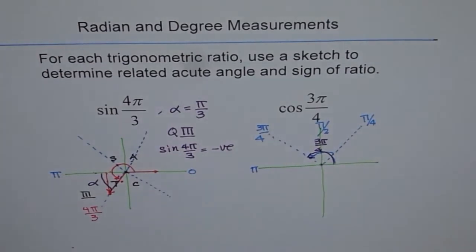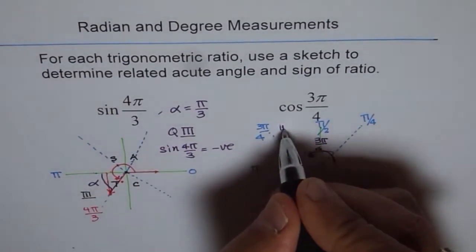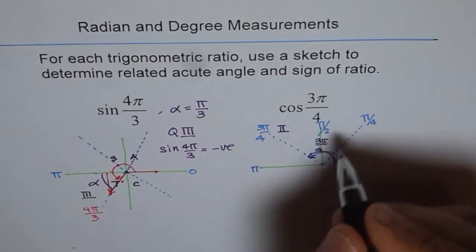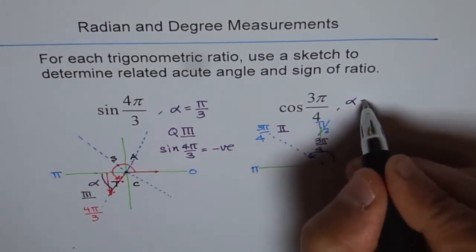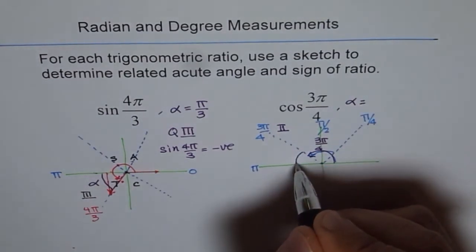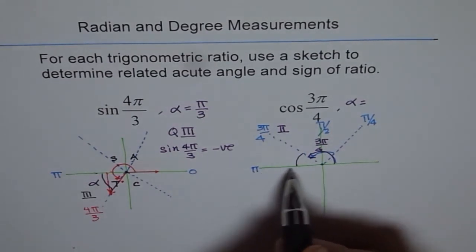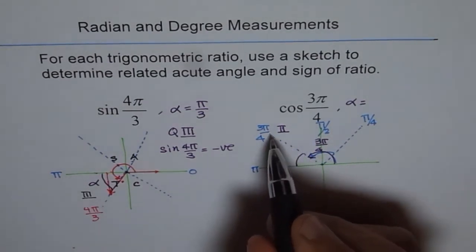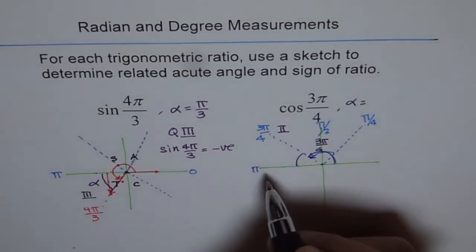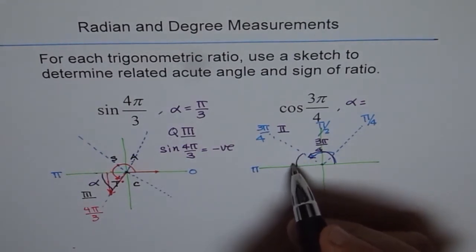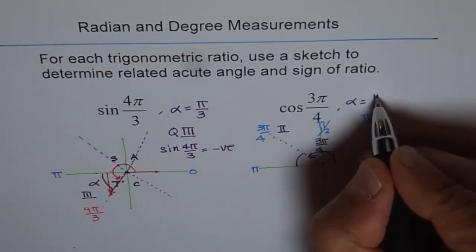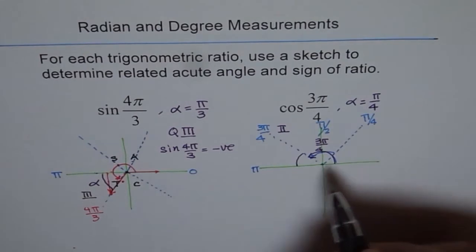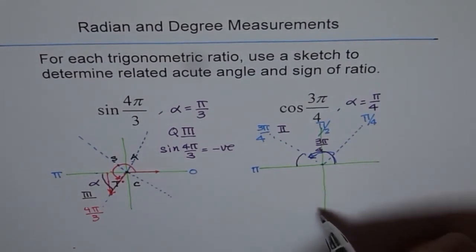That's the principal angle. Now we are in quadrant 2. Related acute angle alpha for us is with the horizontal. So the angle is π minus 3π by 4, which is π by 4. So that's the related acute angle for us.